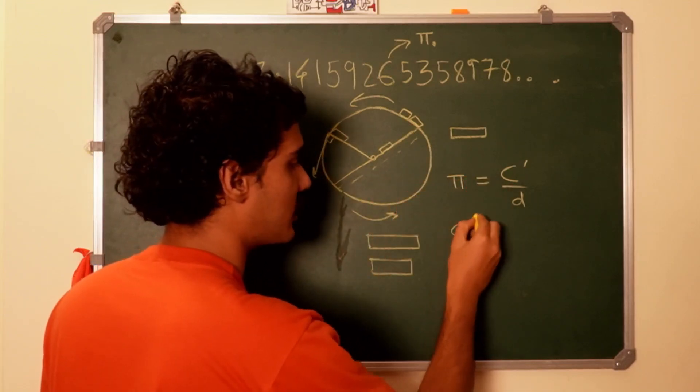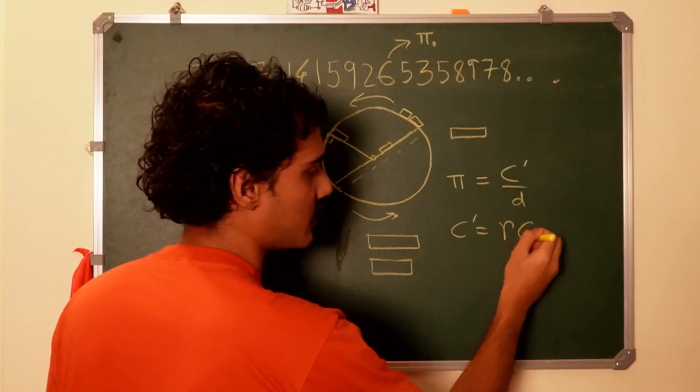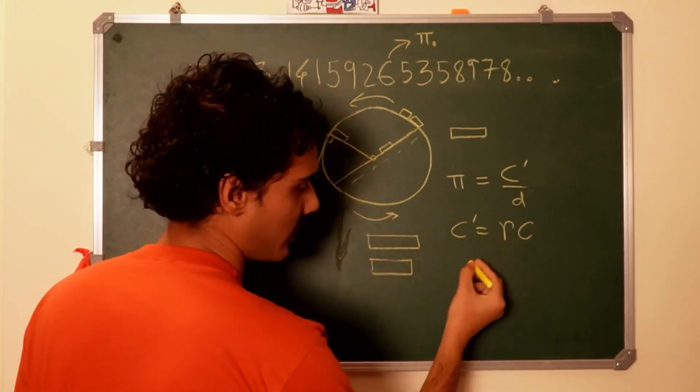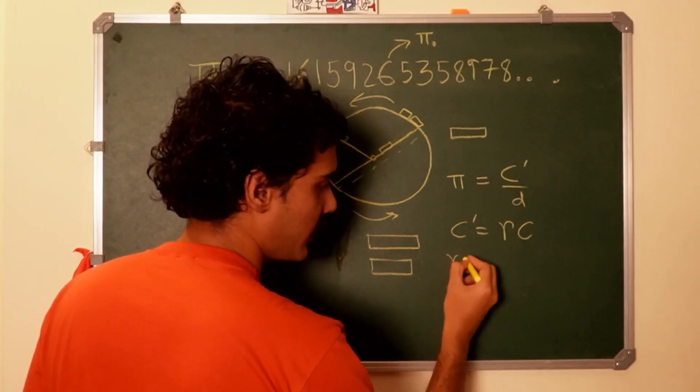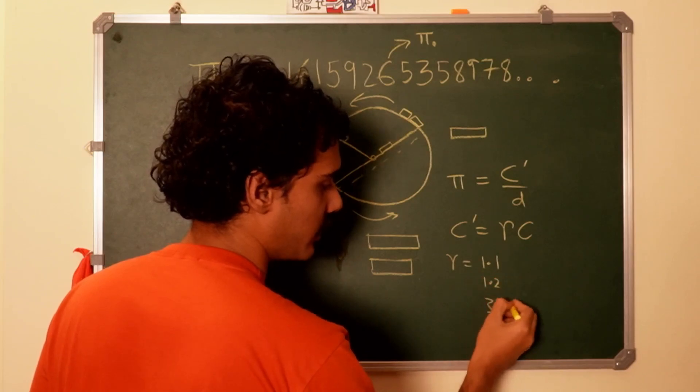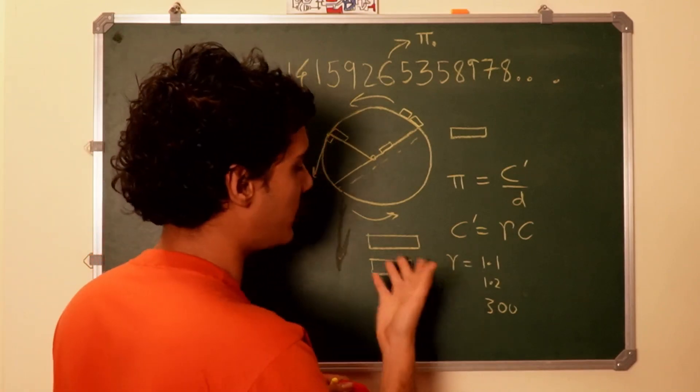C' as it turns out would equal gamma times C. And what is gamma? Gamma is a factor, it's a number greater than one. So it can be 1.1, 1.2, it can be 300, whatever. So it's the amount by which the meter stick has shrunk.